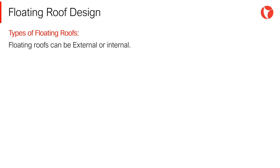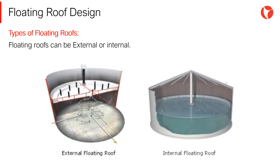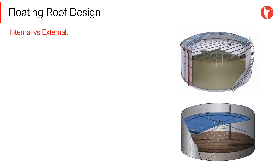There are two types of floating roofs: the external ones, which rest on the stored liquid and are in contact with the environment, and the internal ones, those not in direct contact with solar radiation and rain. The process of sending and receiving the stored liquid is the same for both configurations. The main differences between internal and external roofs are the following.